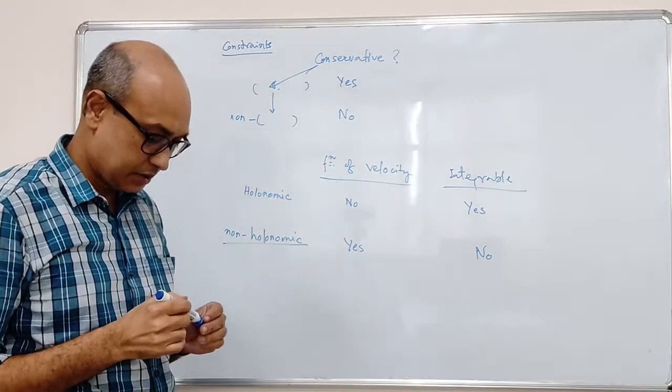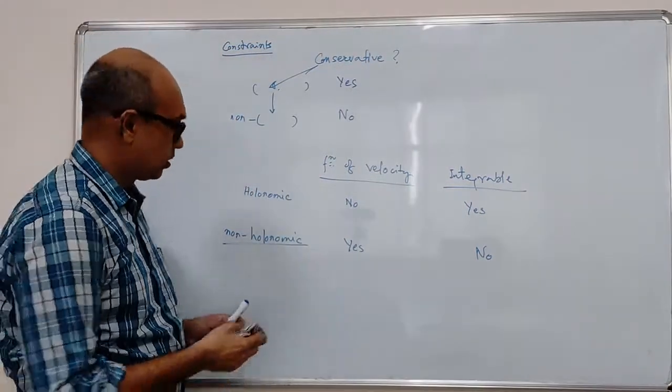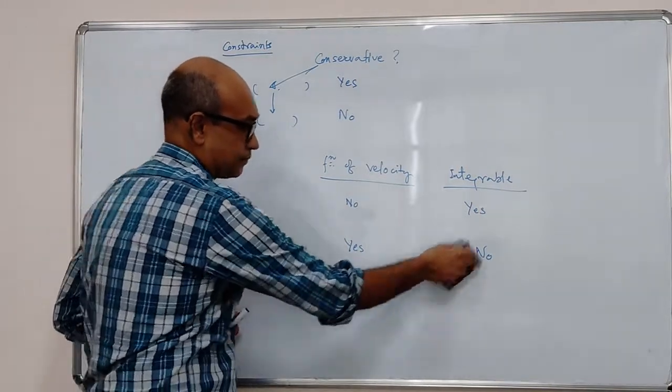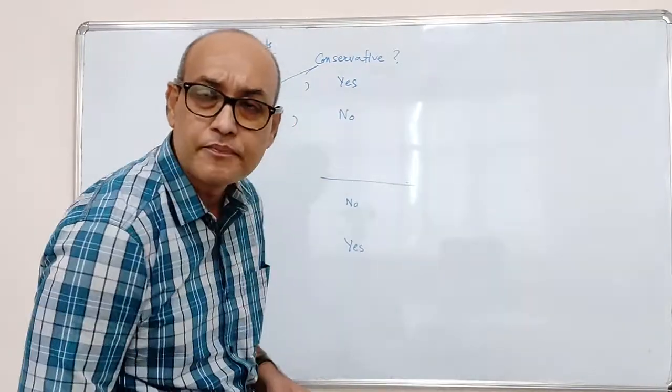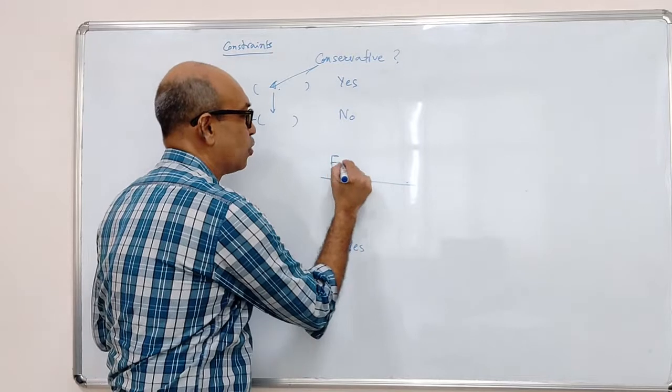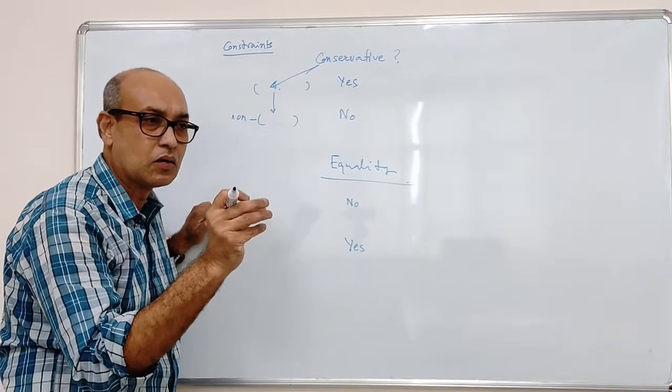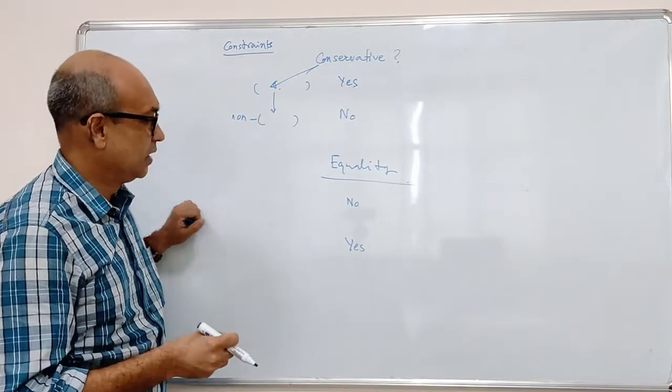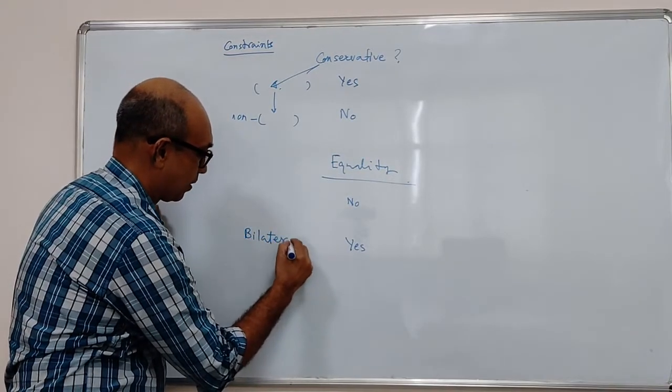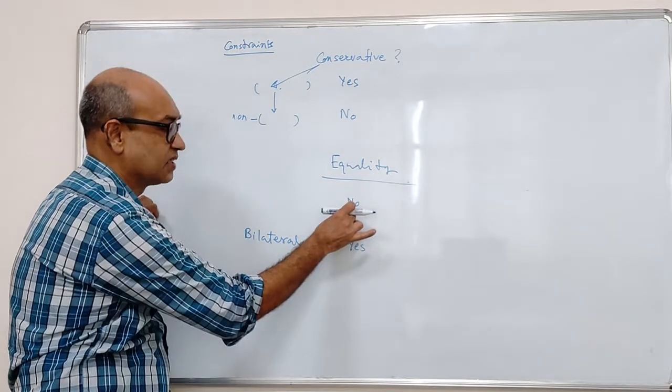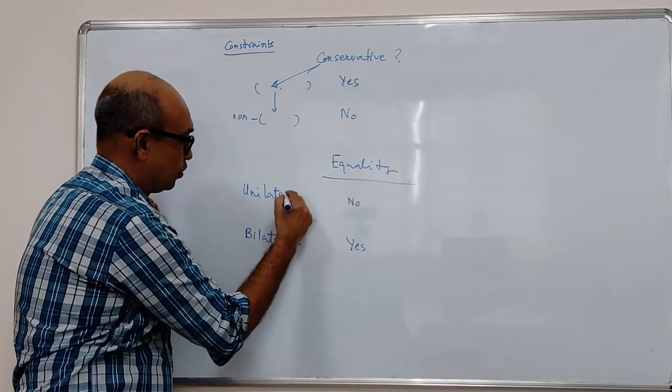There is another classification, that too is quite encountered often. It's called unilateral over bilateral. This definition is more mathematical. Mathematical in the sense that you ask the question whether the equation of the constraint is given by an equality or inequality. If it is given by equality, then you call it bilateral. If it is given by an inequality, then you call it unilateral.